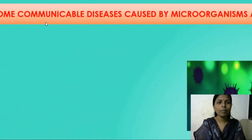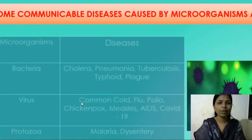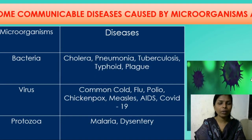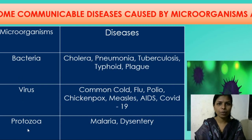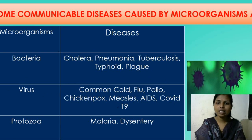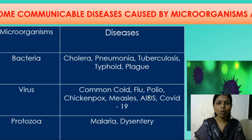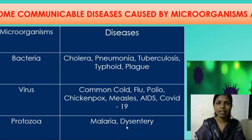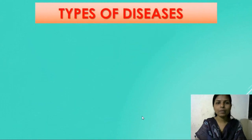Next we are going to learn about Communicable Diseases caused by microorganisms. The different types of microorganisms include bacteria, virus, and protozoa. Because of bacteria, some diseases are caused like cholera, pneumonia, tuberculosis, typhoid, and plague. Due to different types of viruses, diseases like common cold, flu, polio, chickenpox, measles, AIDS, and COVID-19 are caused. Due to the protozoa, diseases like malaria and dysentery are caused. These are the different types of diseases.